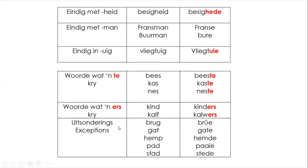Then we have exceptions, of course. All of these are rules you're going to have to read up on and refer back to when you do your homework. Van die uitsonderings: brug word brugte. Gat - short vowel - word gate. Hand word hande. Bad word baaie. En stad word stede.